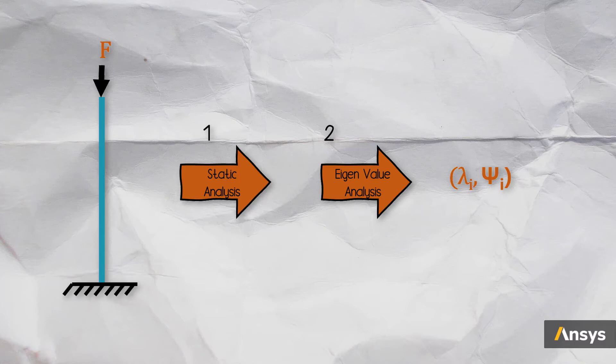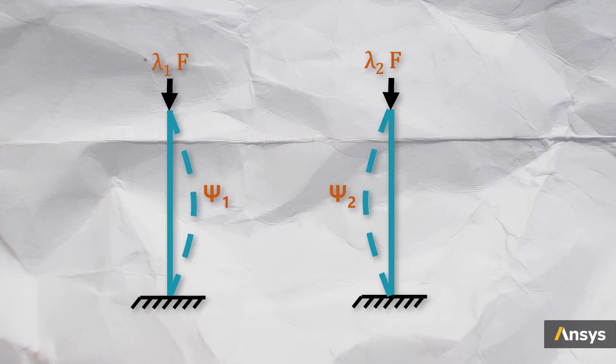Going back to the column example, an eigenvalue analysis provides the buckling shapes, psi 1 and psi 2, and the load multiplying factors, lambda 1 and lambda 2.